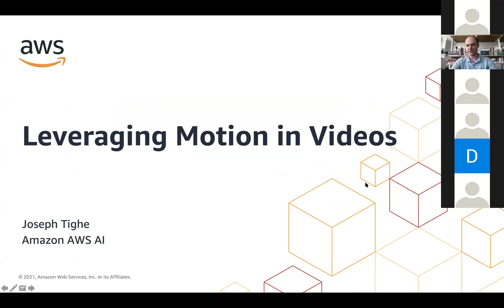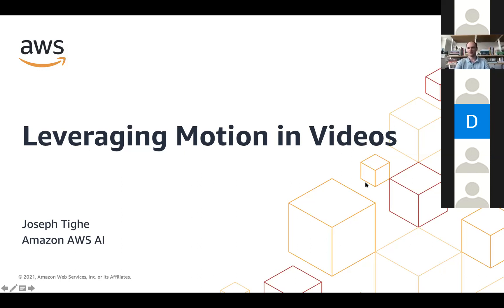Today I'm going to walk through some work that we've done in the past year in my group. I work in the AWS AI group. We support a number of different products and services, and we focus on a number of computer vision tasks, including deep diving into video and understanding what we can do more in video — how do we model video and the motion specifically in video. A lot of this work is under submission, though some of it has been accepted to CVPR.